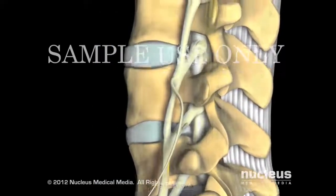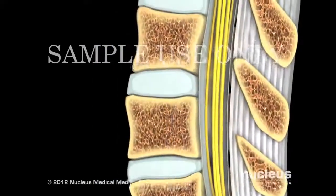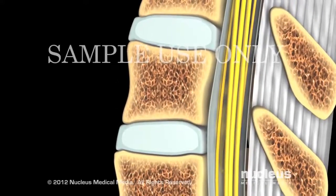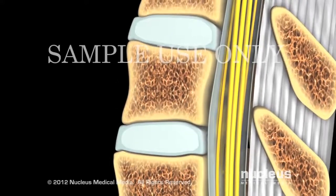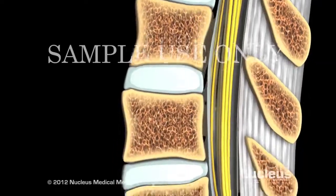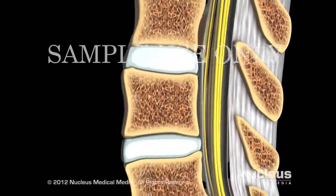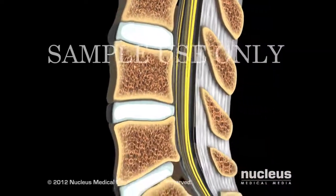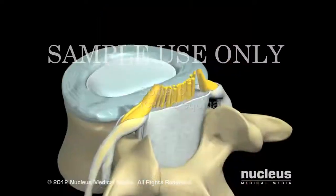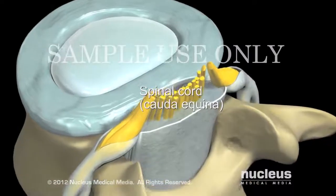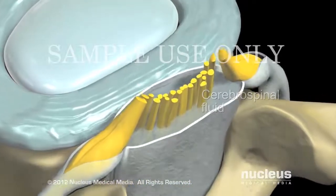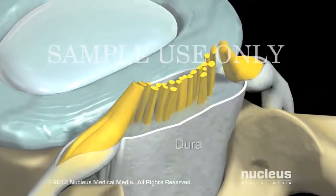The spine consists of bony vertebrae stacked one on the other, shock-absorbing intervertebral discs lying between the vertebrae, ligaments and muscles connecting the bones, and the spinal cord with its branching spinal nerves.